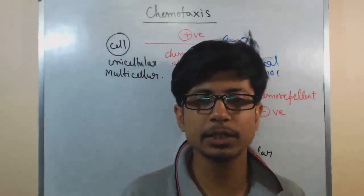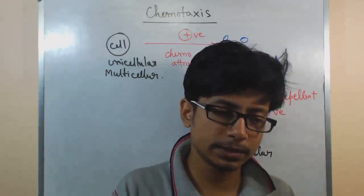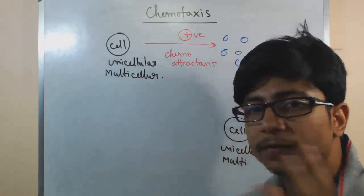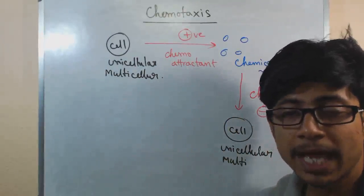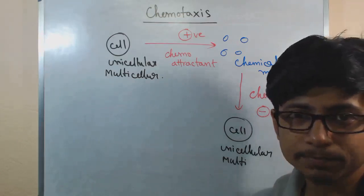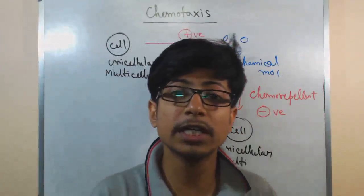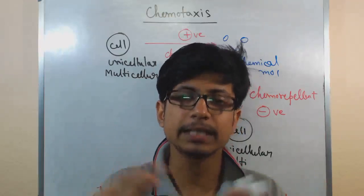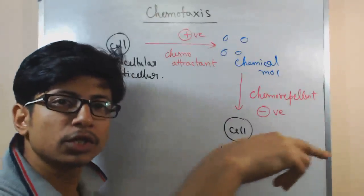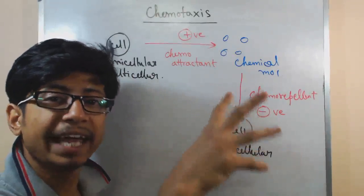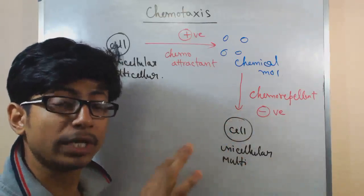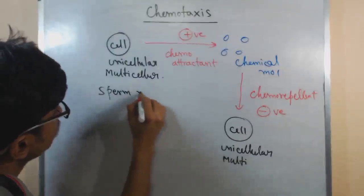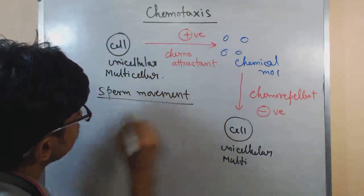Generally, the process of chemotaxis is widely observed in bacteria — it is necessary for establishing different infections in our body during different stages of bacterial invasion. In eukaryotic cells, chemotaxis is shown in early developmental stages as well as in immunological reactions. During fertilization in eukaryotes, the sperm must meet the egg, and the sperm will swim towards the chemical gradient secreted by the egg cell. This is an example of eukaryotic chemotaxis — sperm movement during fertilization.